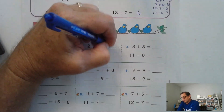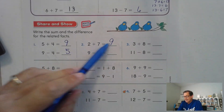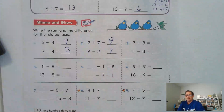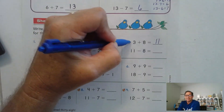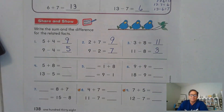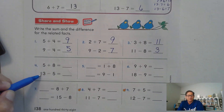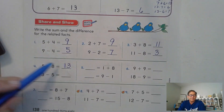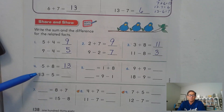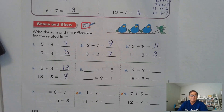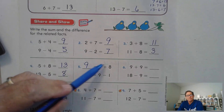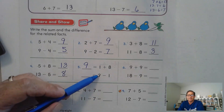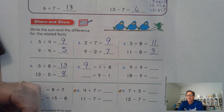Two plus seven is nine. So if two plus seven is nine, nine take away two gives us seven. Three plus eight is 11. If we take away eight from 11, that gives us three, because eight plus three is 11. Five plus eight is 13. So 13 minus five — think of what addition fact you could use to get an answer of 13. Five plus what is 13? Five plus eight. So 13 minus five is eight. Eight plus one is nine. If you have nine and take away one, it gives you the other add-in.